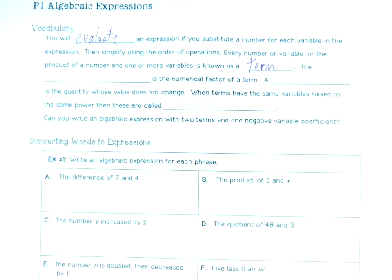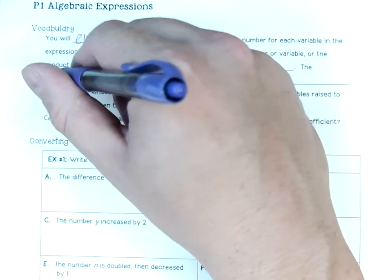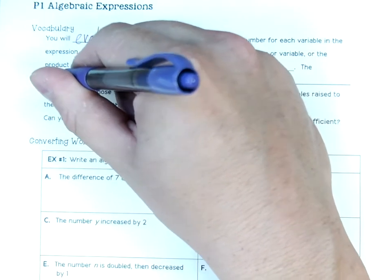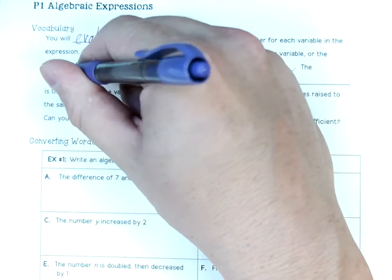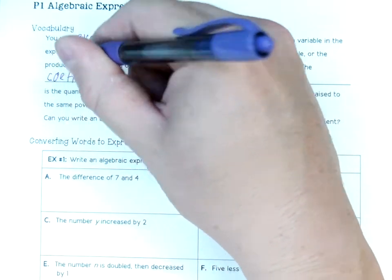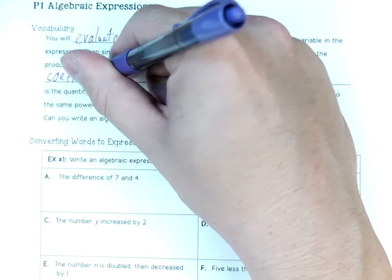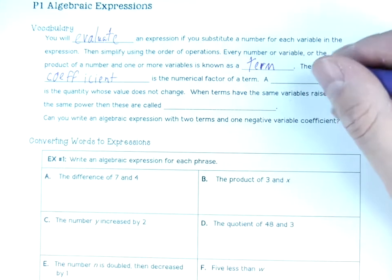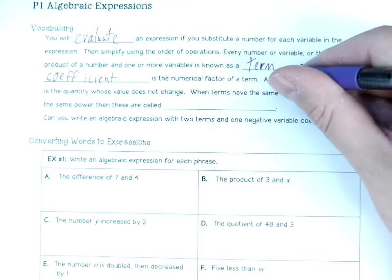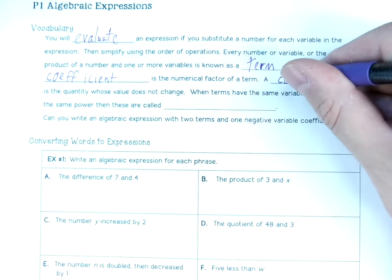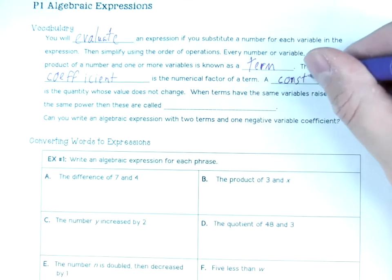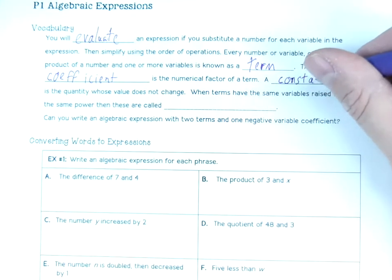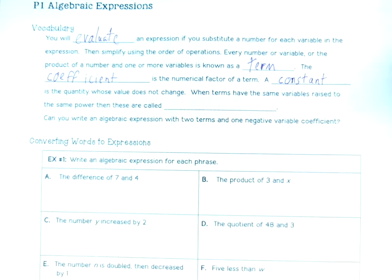Every variable does have a number — even if it's just n, it's one n. The coefficient is the number of a term. A constant is a quantity whose value does not change. Think of numbers — not just whole numbers are constants, but any number is a constant. For example, pi is a constant, even though it is irrational.